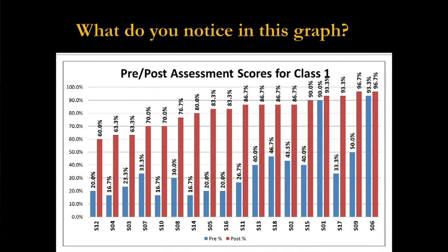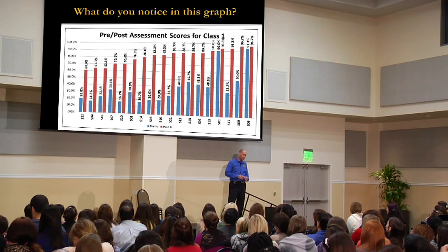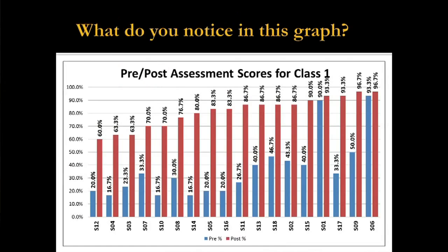Last but not least — student one and student six: on the pre-assessment, they've not only demonstrated mastery of the content but scored an A. So if I proceed through my unit as planned, what can I expect? Serious behavior problems. As a gifted educator, if you see this situation, that's the time to swoop in and offer enrichment activities. They don't need the other stuff you've got planned, but clearly everybody else does. When you see students one and six, give them something engaging, exciting, and interesting that takes their learning to a higher level — not additional worksheets, not in-class tutor duty.